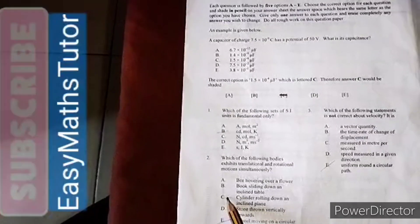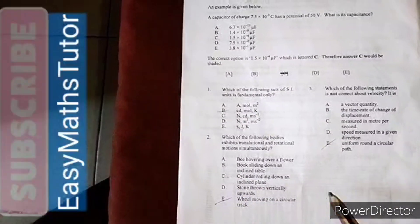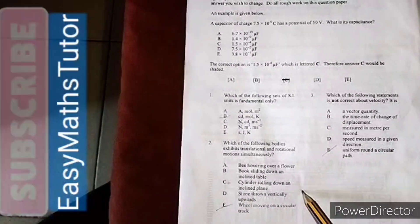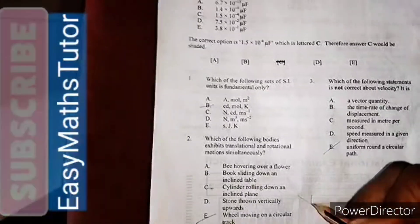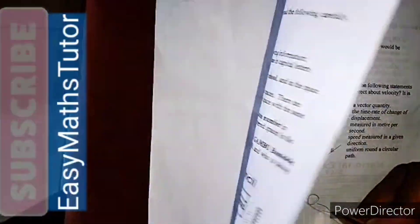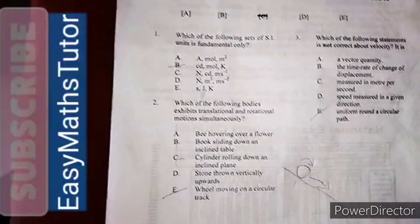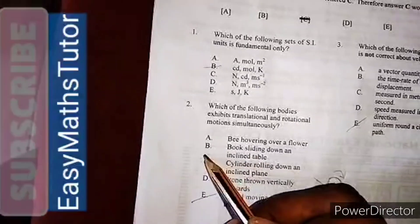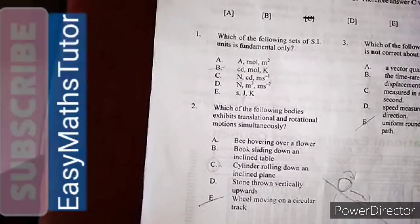I think I'll take C because C means a cylinder rolling down. If you have a cylinder rolling down an inclined plane, this cylinder will also rotate at the same time it moves from one point to the other. So I think C sounds more correct than E.